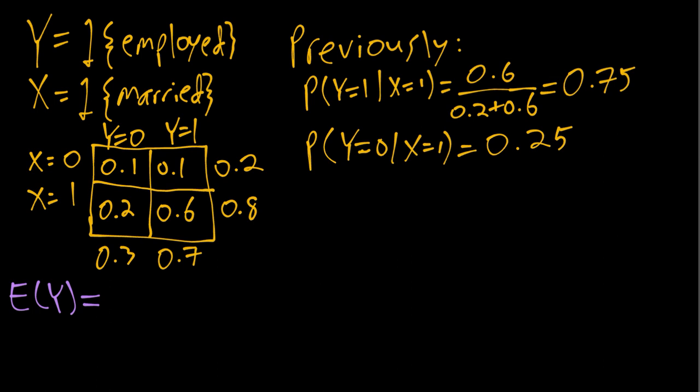So in this case y has two possible values. The first value is zero. So zero times the probability of zero, meaning not employed, plus one times the probability y equals one. And then we can plug in the marginal probabilities we had from the previous video, 0.3 and 0.7.